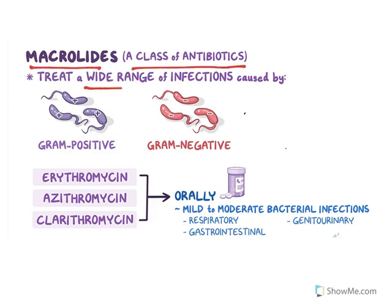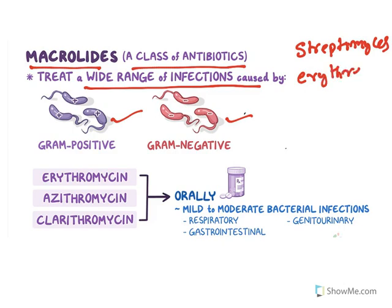Let's start. Now, macrolides are a class of antibiotics that treat a wide range of infections caused by gram-positive and gram-negative bacteria. These macrolide antibiotics are derived from Streptomyces erythraea, a type of soil bacteria from which all macrolide antibiotics are isolated.